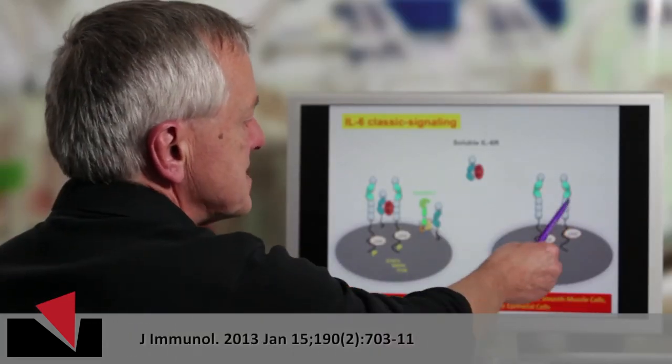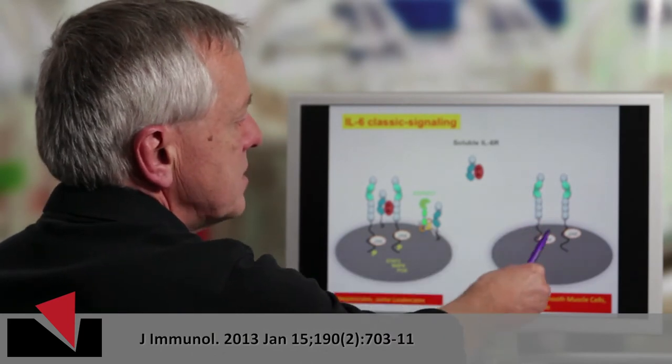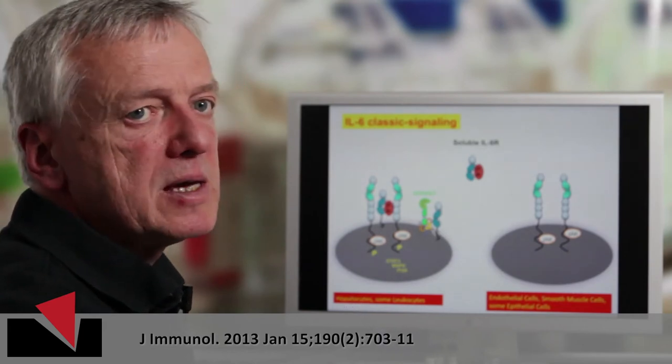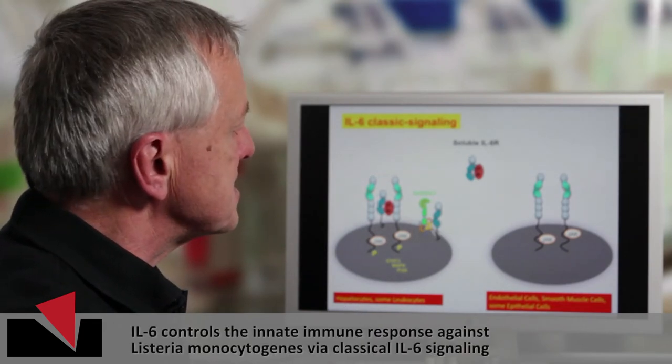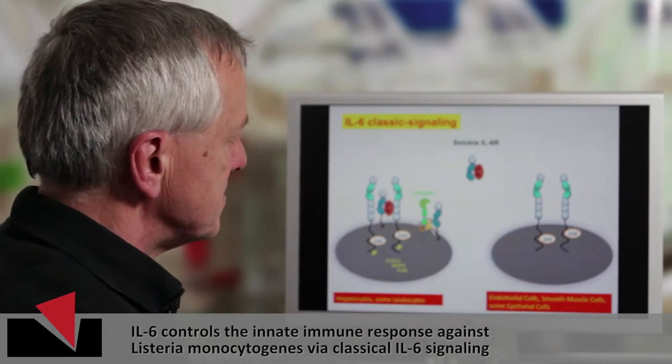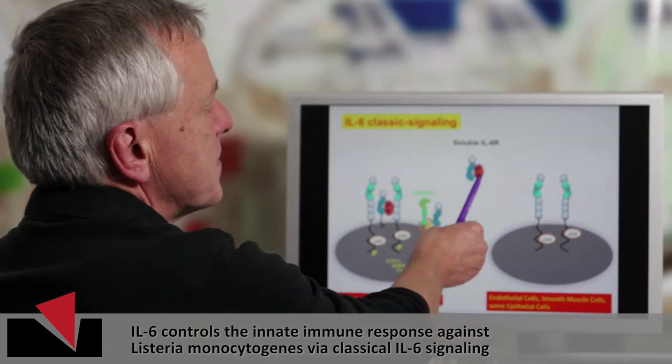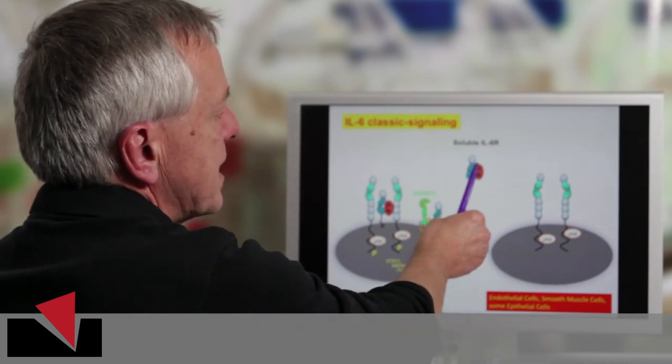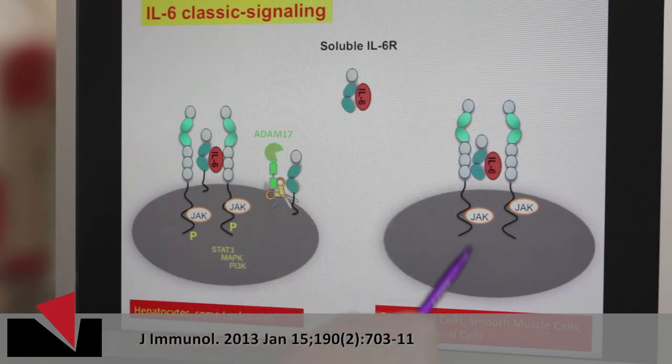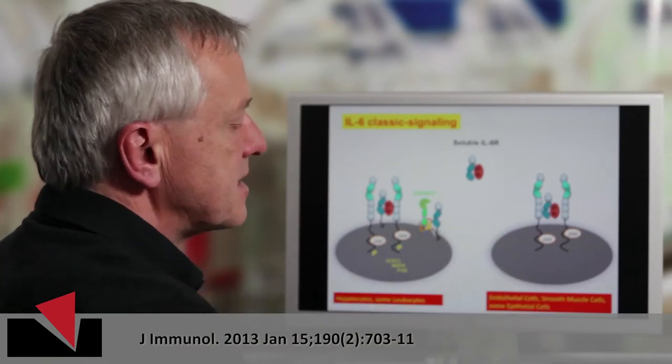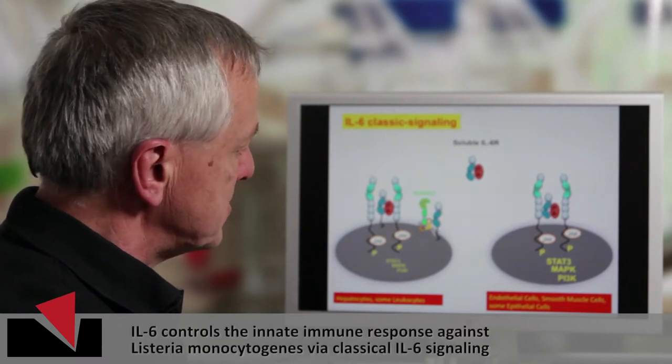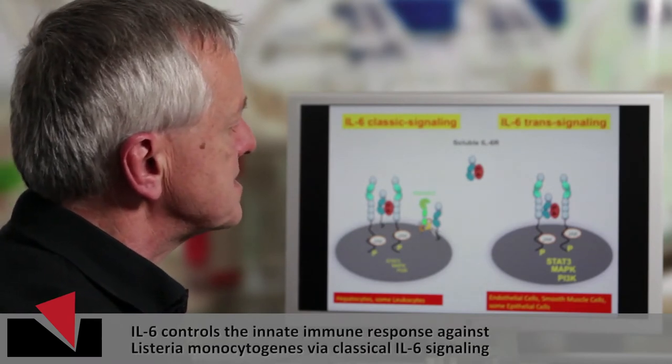The important aspect is that a cell like this, which has only GP130 but no membrane-bound IL-6 receptor, would not be able to respond to the cytokine IL-6. And GP130 is actually expressed on all cells of the body. What we found is that the complex of soluble IL-6 receptor and IL-6 can actually bind to GP130 on the cell surface of these cells, and it can not only bind, it can also induce intracellular signaling. And this pathway we have called trans-signaling.